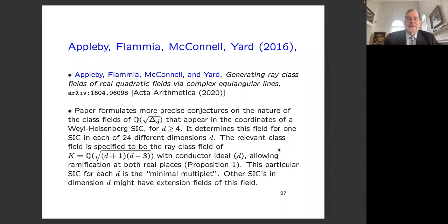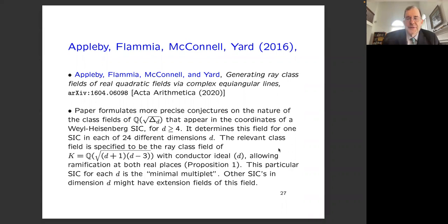Appleby, Flammia, McConnell, and Yard wrote a follow-up paper, since the observation that the field generating the fiducial vector coefficients is an abelian extension of a real quadratic field falls within the Hilbert program of class field theory classifying all abelian extensions of algebraic number fields. Their paper, titled 'Generating Ray Class Fields of Real Quadratic Fields via Complex Equiangular Lines,' was put on the arXiv in 2016, when Gene Kopp was writing his thesis.